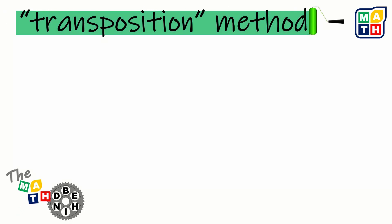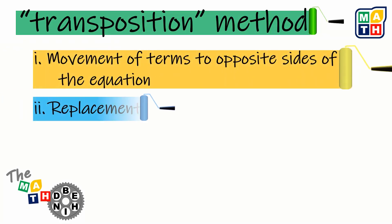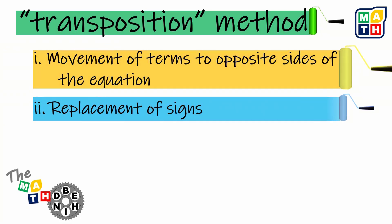The transposition method is one of the most common methods in solving linear equations. It involves two different steps. Step one is the movement of terms to the opposite sides of the equation. And step two, as we move those terms, we are going to replace their signs to their opposite sides.